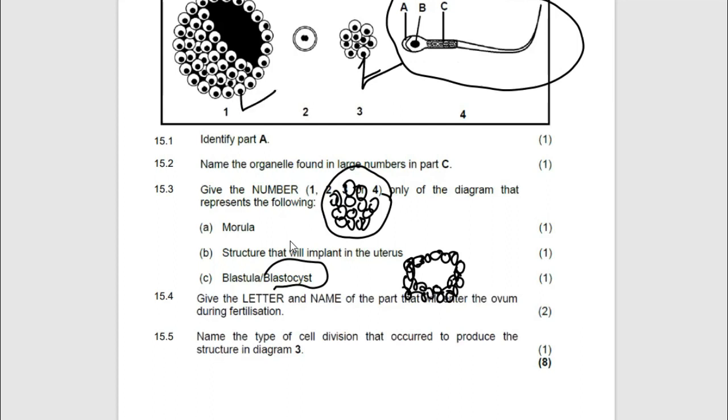And then they are saying the structure that will implant in the uterus. Which structure will implant? The moment you form a blastula, it is going to form finger-like projections which you call chorionic villi, which are used for implantation. So basically, it is going to be number 1 again. Yes, so it is going to be number 1.